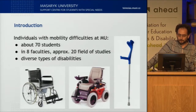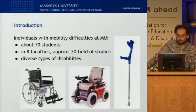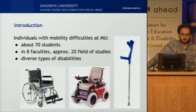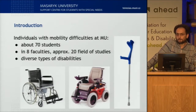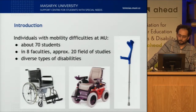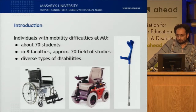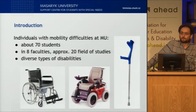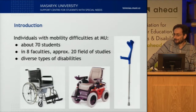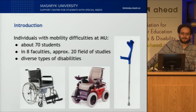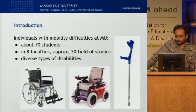In our university, which has eight faculties, approximately 70 students with various types of mobility impairments, mobility difficulties, and motor disabilities study. They study approximately 20 or 25 disciplines. And as is the case with the buildings, these users — students and other staff of the university — are also very diverse.